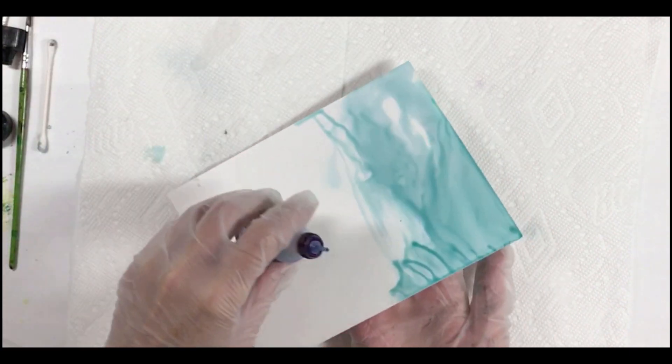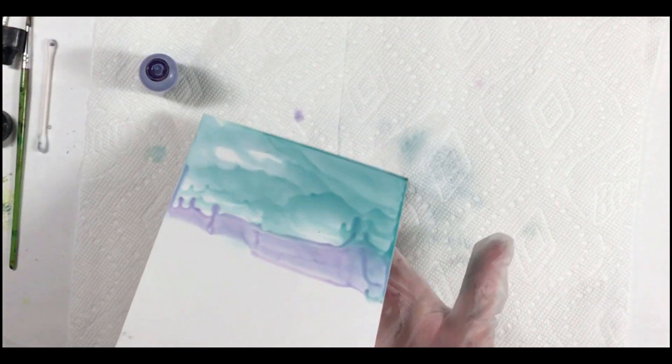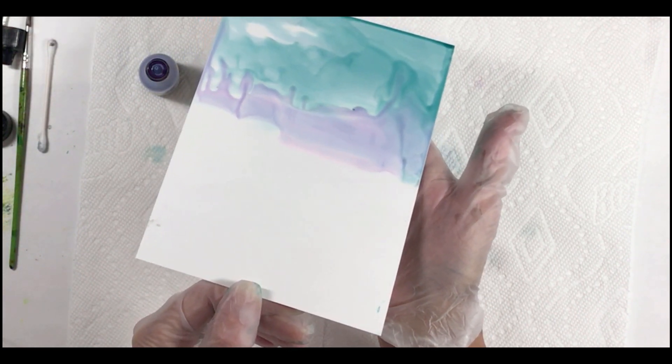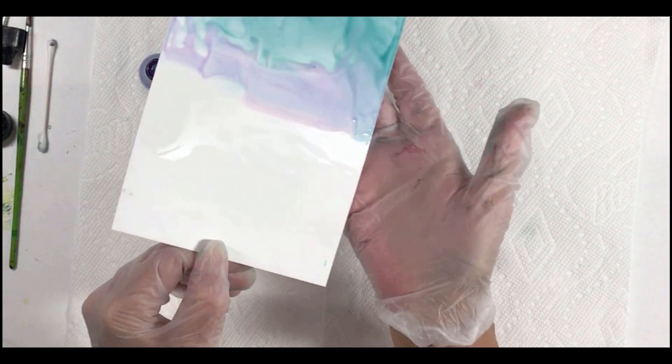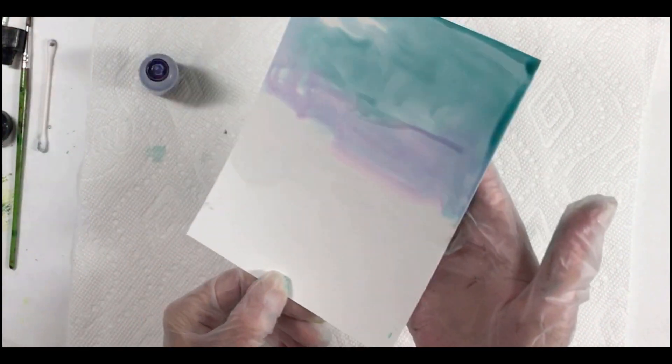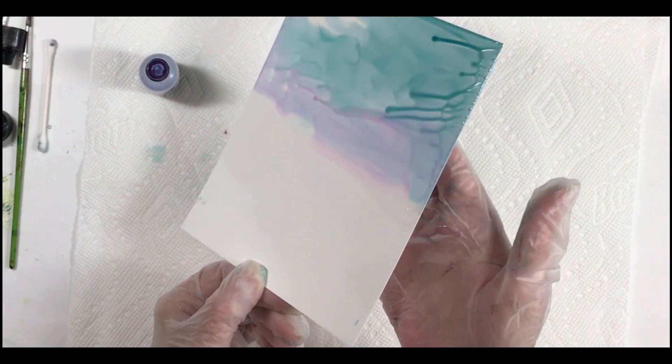Next I'm going to take some cool peri and put that at the bottom of that Cloudy Blue and let's now let that mix in a little bit with the Cloudy Blue and again tilt our paper from side to side to start to mix those colors together.